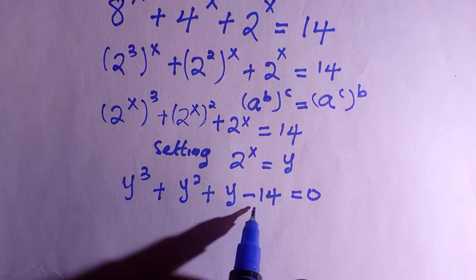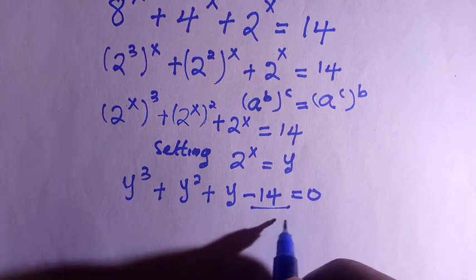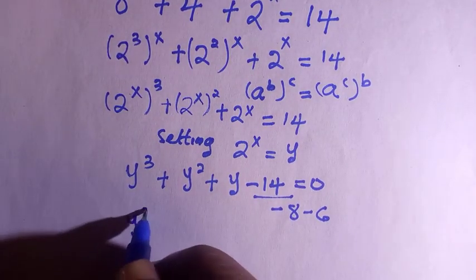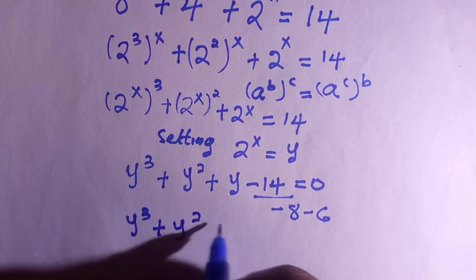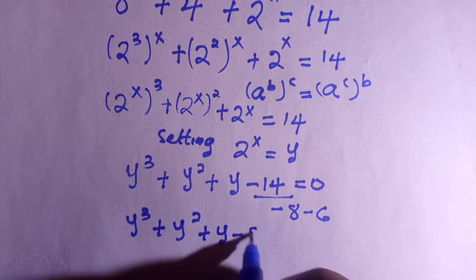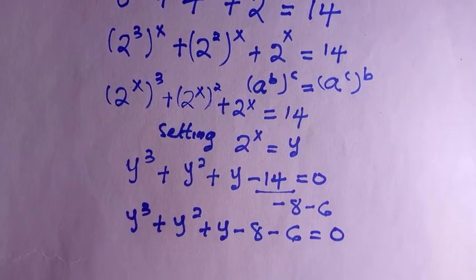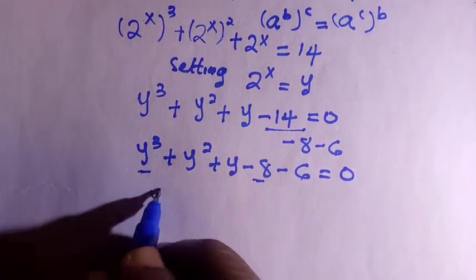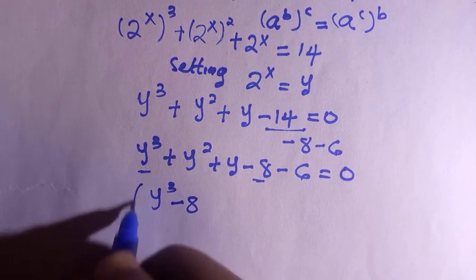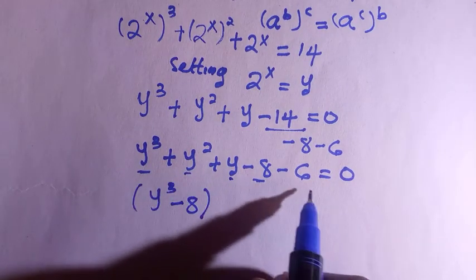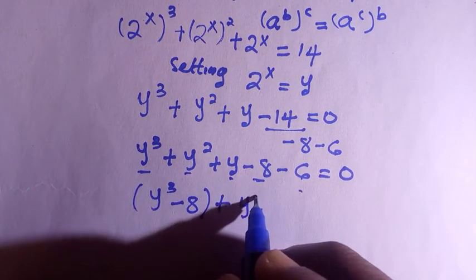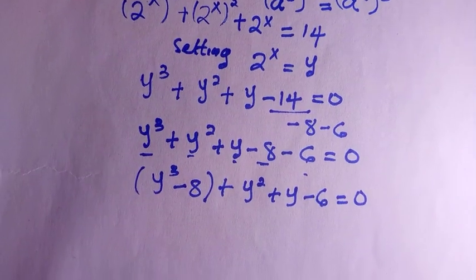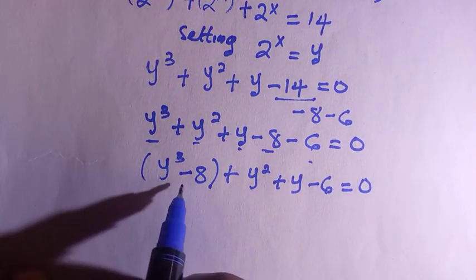Here is what I'm going to do: I split minus 14 as minus 8 minus 6. Replacing 14 with these two values gives us y cubed plus y squared plus y minus 8 minus 6 equals 0. I then group this as (y cubed minus 8) plus (y squared plus y minus 6), all equal to 0.